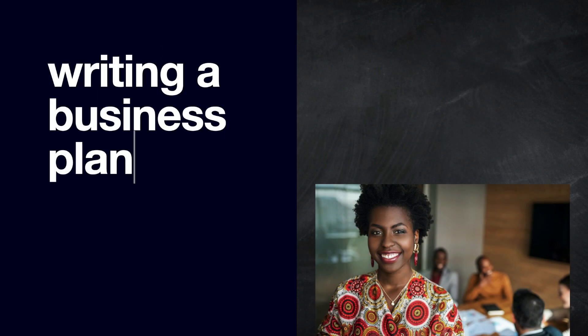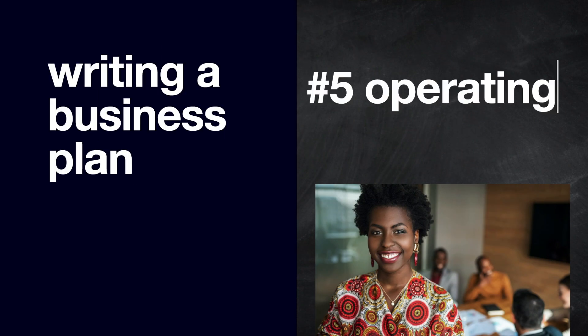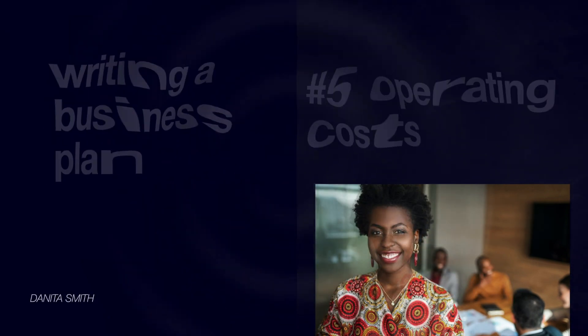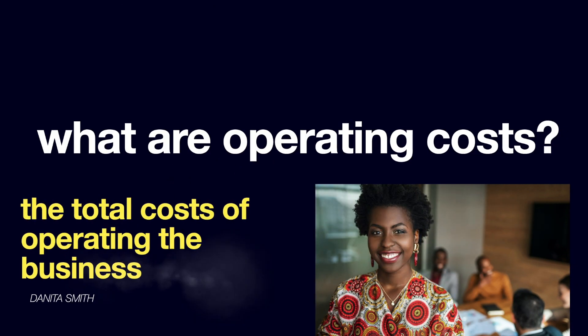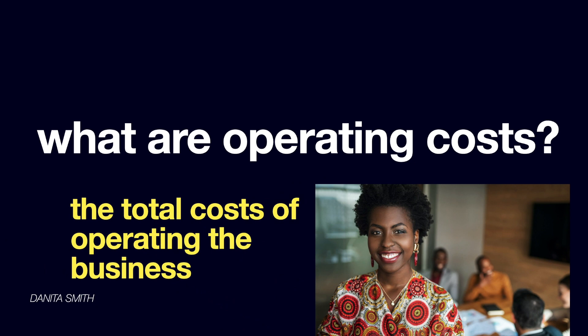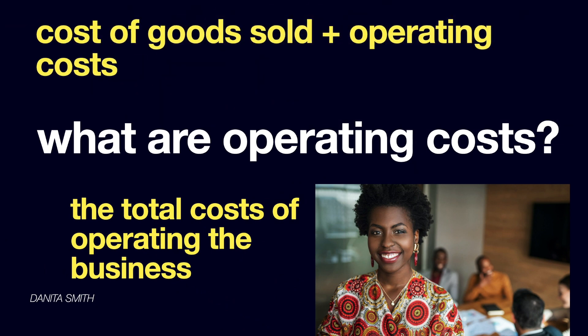Let's look at writing a business plan from an operating cost perspective. What are operating costs? Essentially, they are the total costs that go into running and operating your business — anything you can think of. This includes the cost of goods sold, or the direct costs that go into making the product you sell, and any other costs you have.